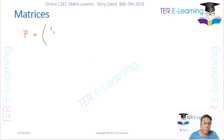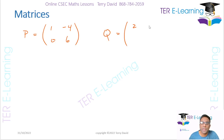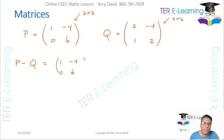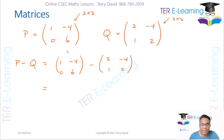What if I have P equal to 1, minus 4, 0, 6, and Q is given by 2, minus 4, 1, and 2, and I want to work out P minus Q? Before we do anything, we have to check the order of the matrices. This here is a 2x2 matrix because I have 2 rows and 2 columns. This one is also a 2x2 matrix. So both matrices have the same order and we can subtract corresponding elements.